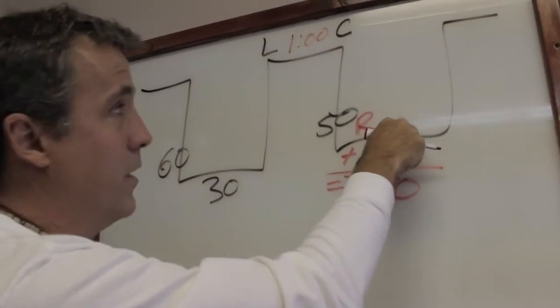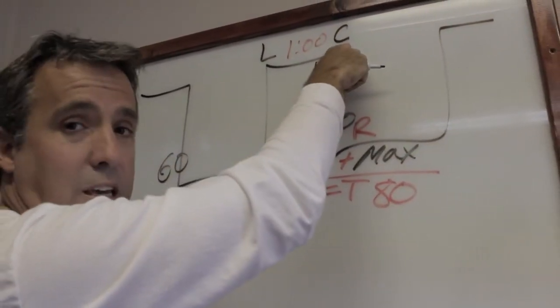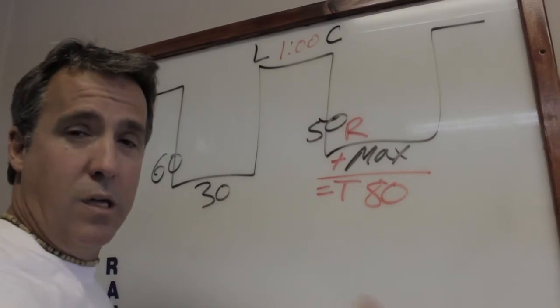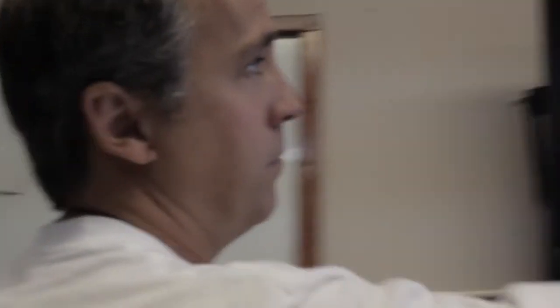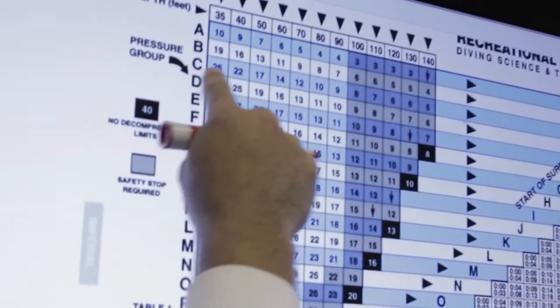Now I've got to find out what my residual is. If I'm in pressure group C, I know I have residual nitrogen in me. C at 50 feet has 17 minutes of residual nitrogen.